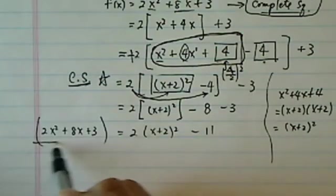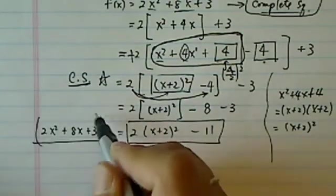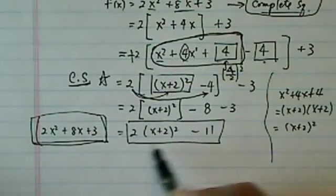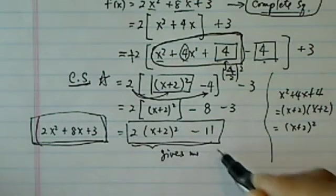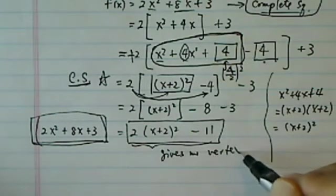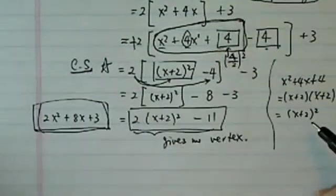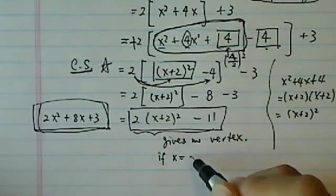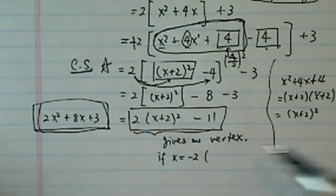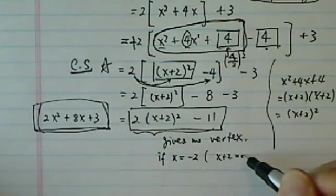So I'm basically rewriting this one into a different form. And why do I want to do that? Because this little form gives me where the vertex is. The reason it gives me a vertex is this. Now imagine, if x is equal to minus 2, how I get that? I said x plus 2 equal to 0.